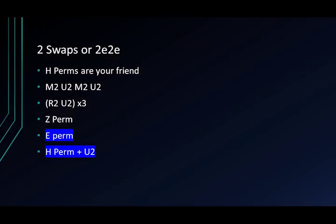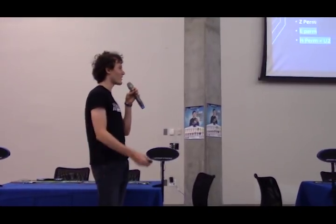Two swaps, also known as 2E2D — an H-perm is a two-swap, where we swap two edges and another two edges, because we can't swap only two edges on the 3x3 cube. Common ones: the H-perm (M2 U2 M2 U2), R2 U2 repeated three times. For corners we could do something like the E-perm, or H-perm plus U2, which will switch corners diagonally on one face. If you see two edges already swapped and want to do another swap even without parity, these are things to definitely experiment with. Think: how can I use an H-perm, Z-perm, or X-perm in my solve? Eventually you'll start to figure things out.